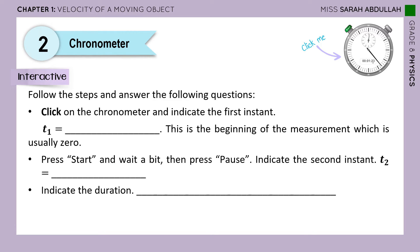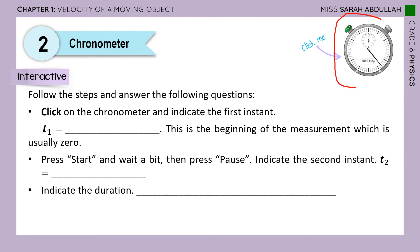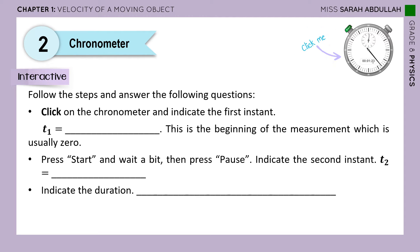Now we're going to get to know what a chronometer is. We're doing a little interactive activity that will let us understand it. This is a chronometer — this is its picture. Every time you see the words 'click me' on a picture, it means it is clickable. In the PDF PowerPoint I sent you, you can open it and click on this, and it will take you to a simulation where the experiment will happen.